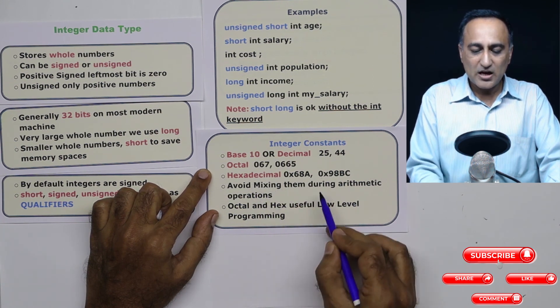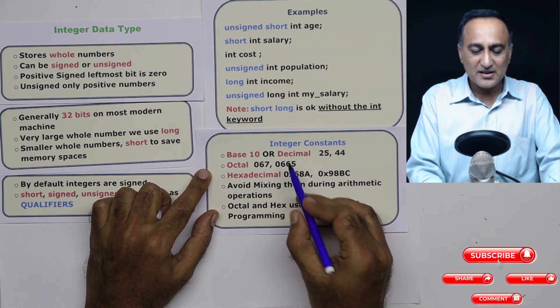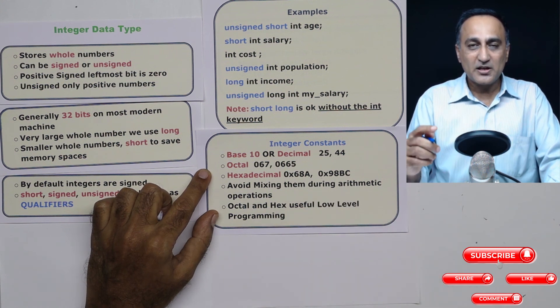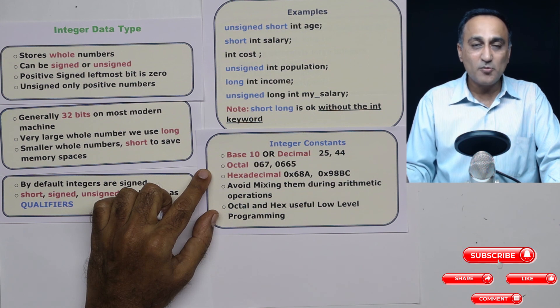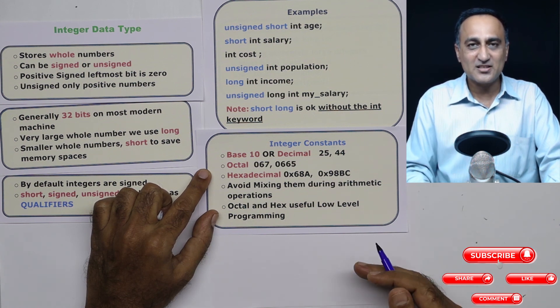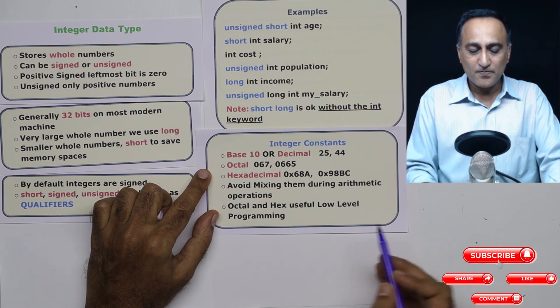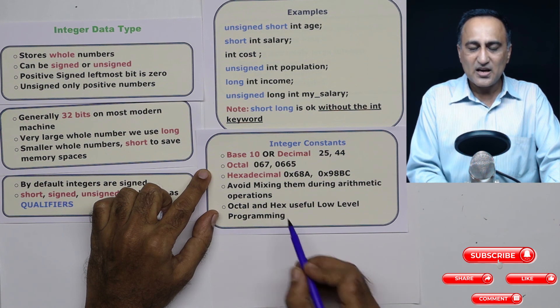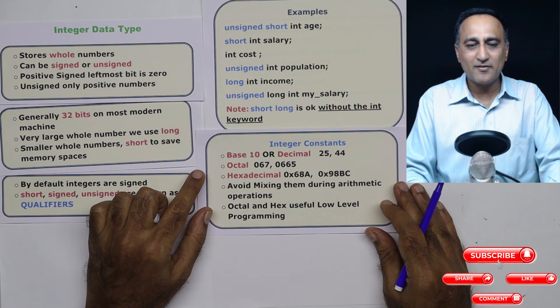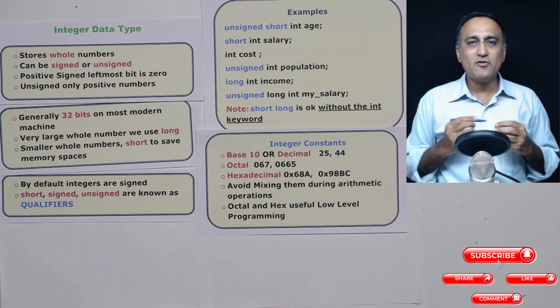Now the moral of the story is avoid mixing any of this octal, hexadecimal, base 10 in the arithmetic operations. Don't use multiplication of an octal with a decimal with a hexadecimal. You will be confused as to how the process is happening or what is the final result. When you are going to try to debug it will turn out to be a nightmare for you. These numbers octal and hex are extremely useful when you are working on bitwise operators or doing low level programming. So we'll deal with them as and when we come to those kind of problems.